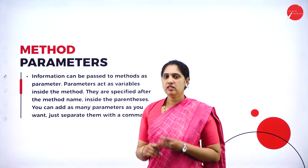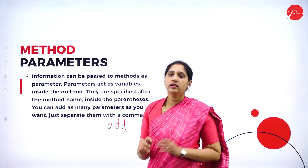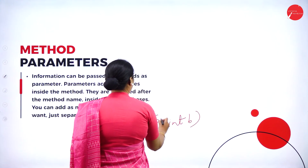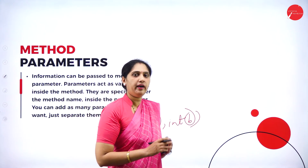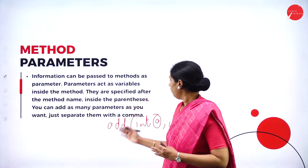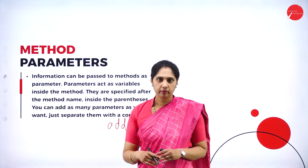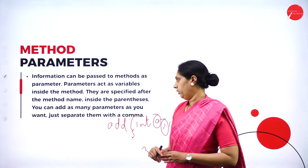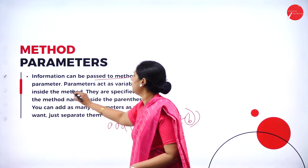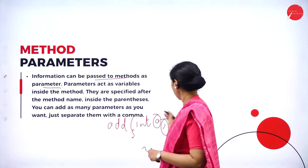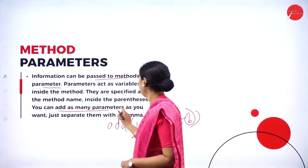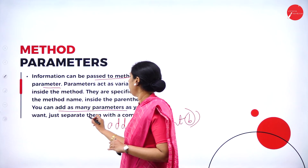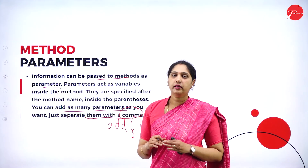Next is method parameters. For the add method we had two parameters: int a, int b. Parameters are helpful when we use those variables inside our method. If I want more than one parameter, they are separated by comma. The information passed to a method is the parameter. You can add as many parameters as needed — there is no restriction — separated by comma.